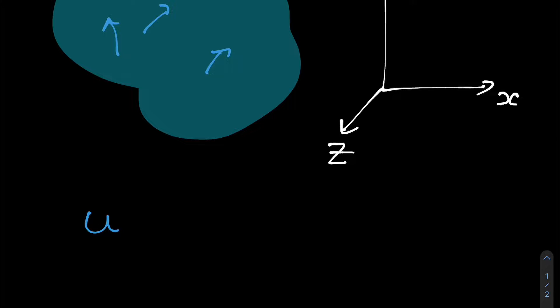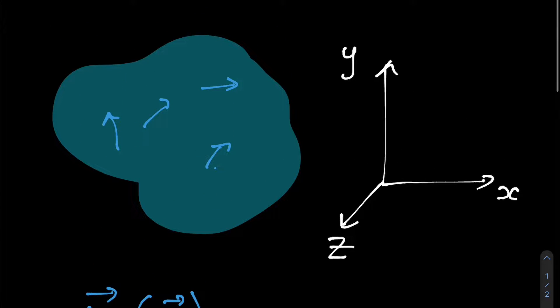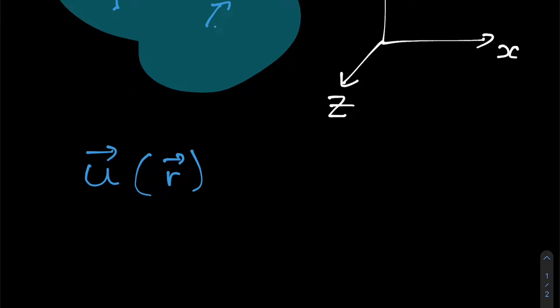And we're going to describe the velocity of our fluid, u, at any point in space, let's say r, using a vector. u is a function of r because the flow of the fluid can be different at different points in space. Because this is a 3D vector, we can write it in column notation with x, a y, and a z component.